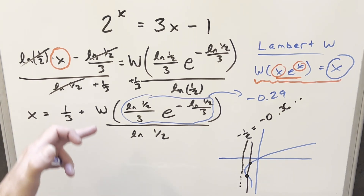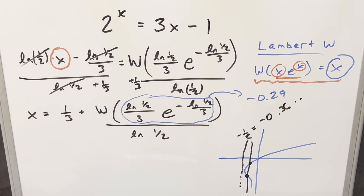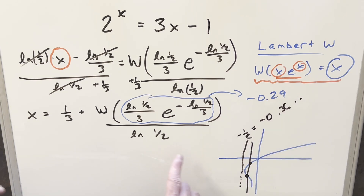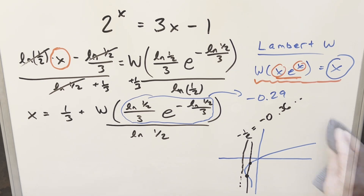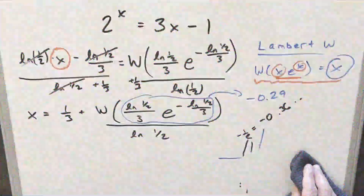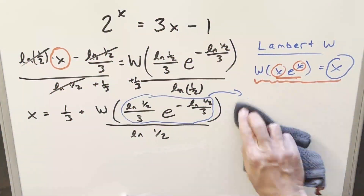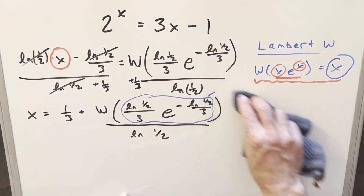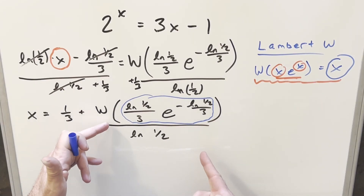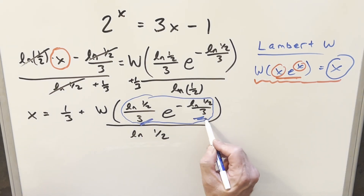You could use Wolfram Alpha or a spreadsheet to estimate the Lambert W value at −0.29 and then plug everything together to estimate x. But for this one, I think we can do better than that — we don't really need approximate solutions. We're able to get exact values for x and for the Lambert W here. So I think we can put aside the graph and calculator and try to get some exact solutions.